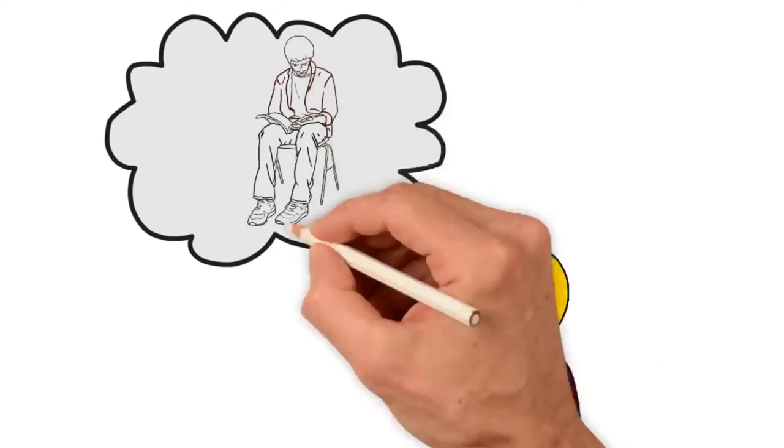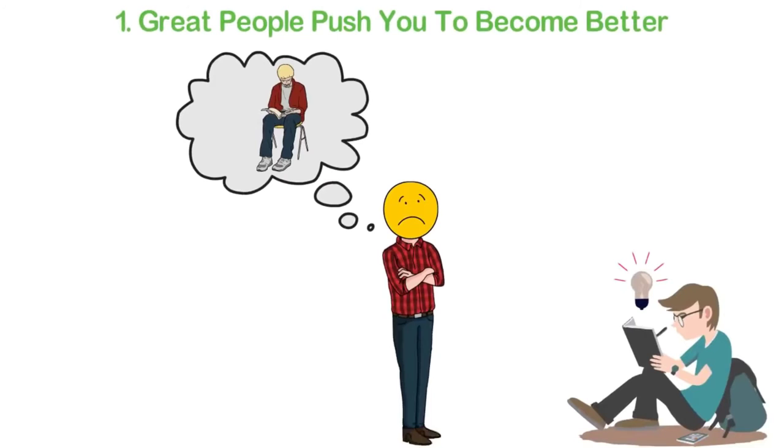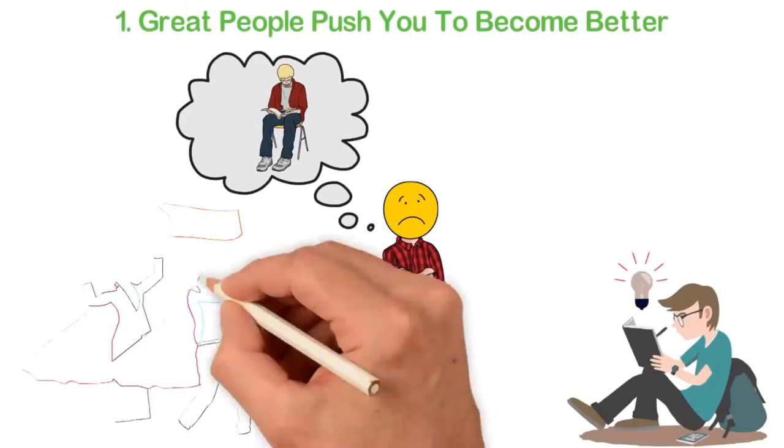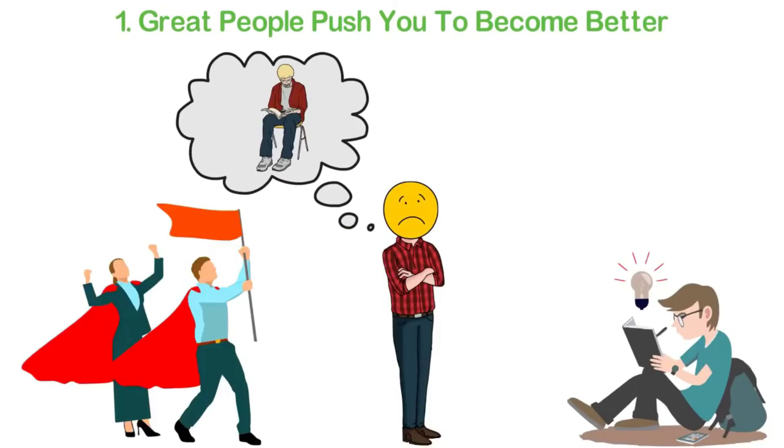The number one reason for failure for most people is that everyone around them is average. If you're connected with ambitious people, you'll be ambitious. If you make friends with average people, you'll become like them.